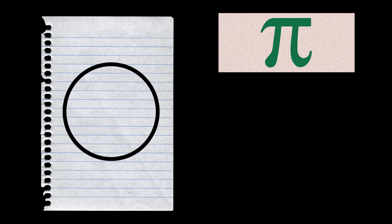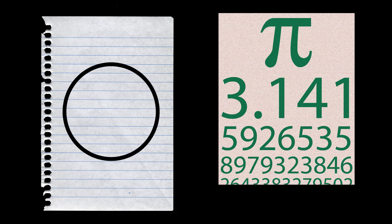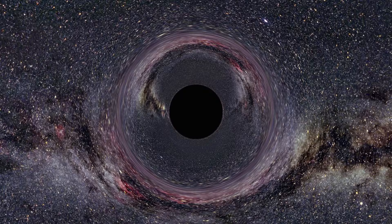If you draw a circle on a piece of paper and then deduce the value of pi from it, you will get this value, always, unless you are close to a black hole.